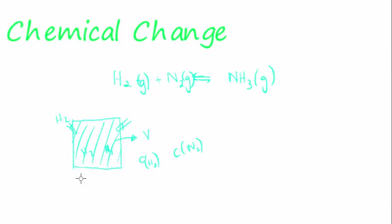Now these two things will react, and as they react with one another, they produce a third substance into this container called ammonia. So now we also have a concentration for ammonia. It's not escaping — it's in there, it's a closed system. Closed system means no matter, which means substances, escape, and no energy escapes.